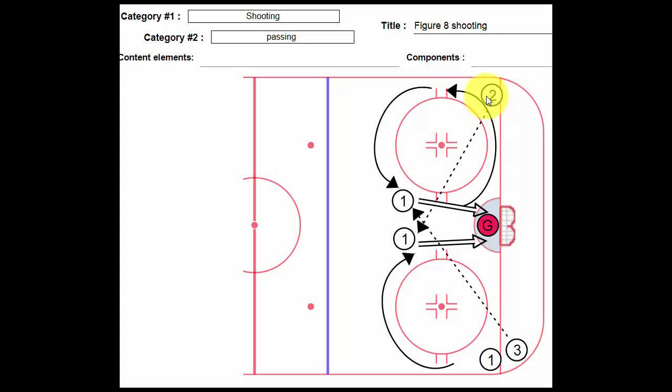Then, if we do the same thing, player 2 comes around the top, he's going to take a pass from 3, shot on net, boom, swings down low, takes a pass from the corner, has a shot, and then ends up over in the opposite corner.